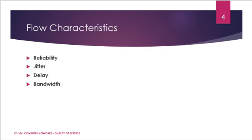These are the flow characteristics that should be covered under Quality of Service. The important characteristics are: first, reliability; second, jitter; third, delay; and finally, bandwidth. We will see each in detail.